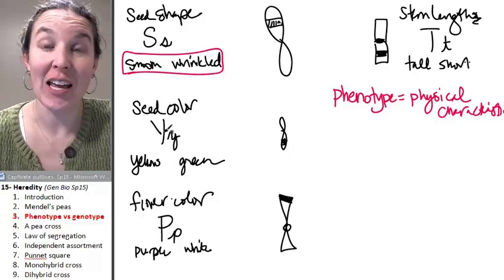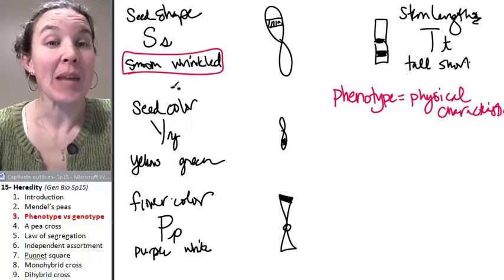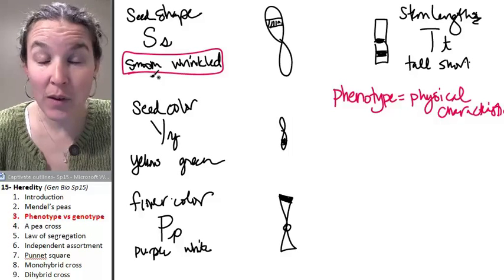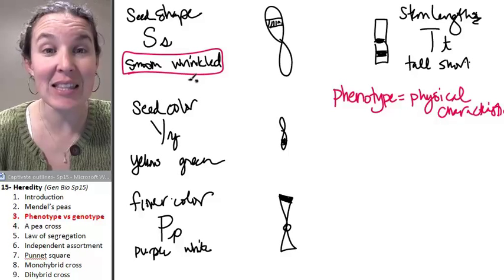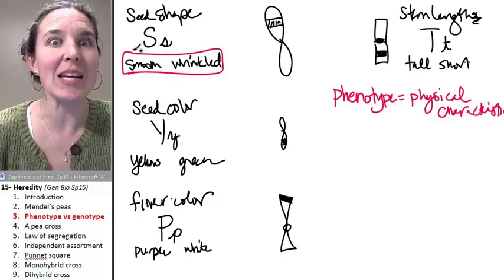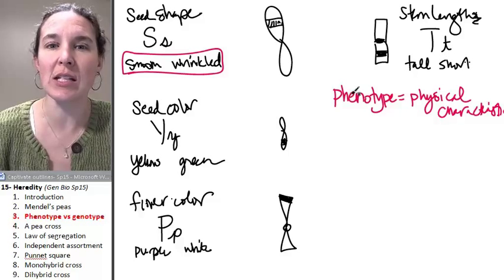Each critter, each pea baby has either a smooth seed or a wrinkled seed, and that is the pea baby's phenotype in relation to the seed shape.